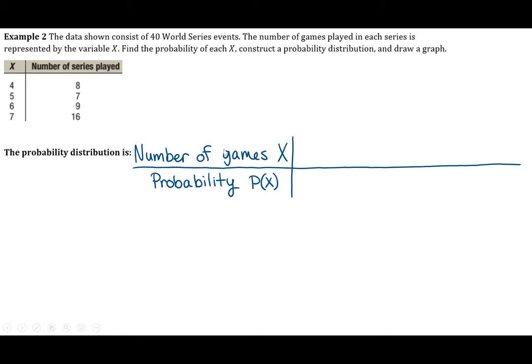The number of games is our random variable — possible values are 4, 5, 6, or 7 games, since you need to win four out of seven to win the World Series. Of the last 40 World Series, eight ended in four games — a clean sweep. So P(4) = 8/40 = 0.2.